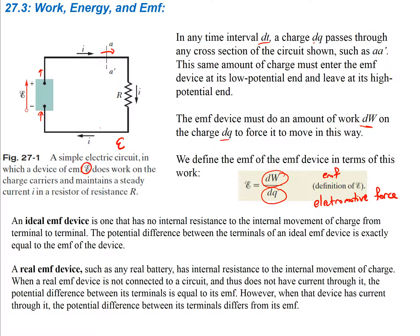There are two types of EMF devices. One is the ideal type. In physics we often use ideal situations. An ideal device is one that has no internal resistance to the internal movement of charge from terminal to terminal. The potential difference between the terminals of an ideal EMF device is exactly equal to the EMF of the device. In most cases we're going to use a real EMF. The real EMF device, such as any real battery, has internal resistance to the internal movement of charge.